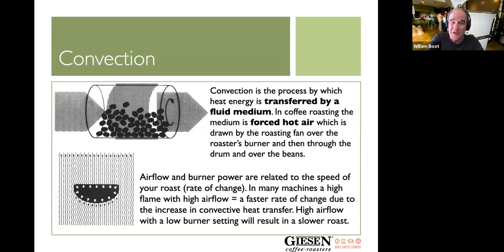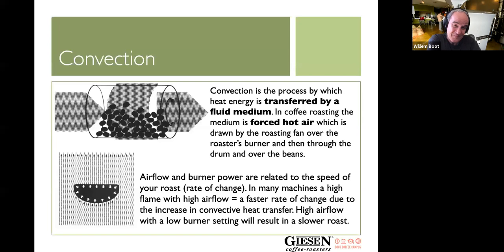Cast iron, on a relative scale compared to carbon steel, is a porous material, so it allows heat to build up more and also to cool down more easily on a relative scale. Cast iron has this amazing ability through its radiant heat to penetrate deep into the heart of the bean. So we've had conductive heat, convection heat, and radiant heat — the three musketeers of heat transfer.